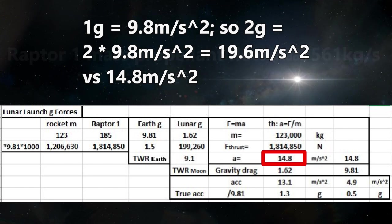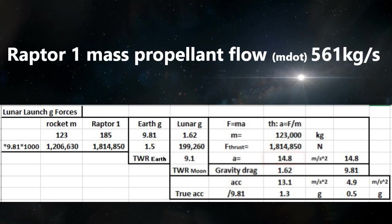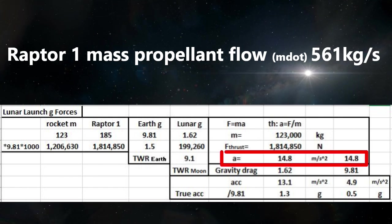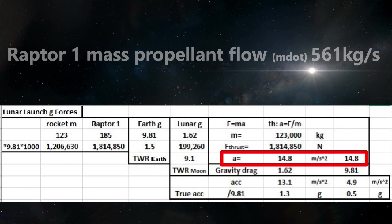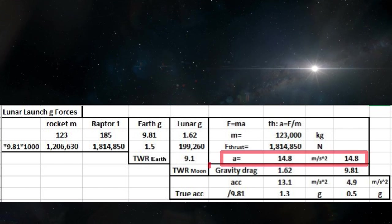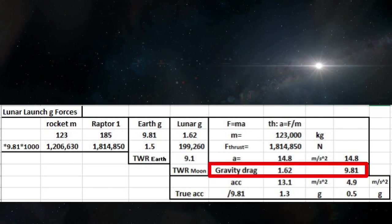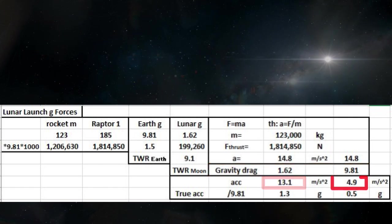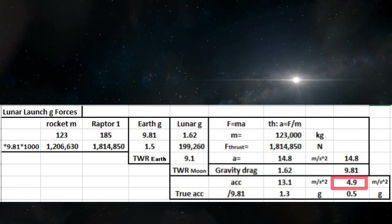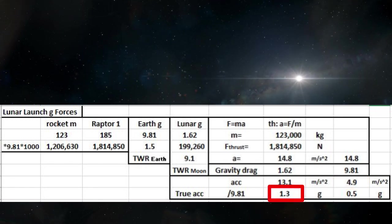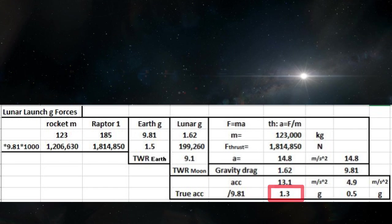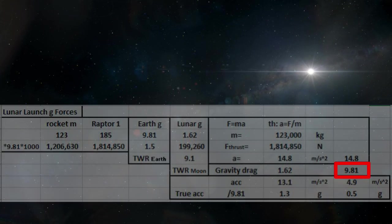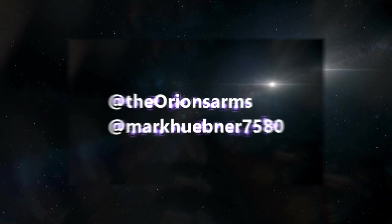We burn over half a ton of propellant per second, so our mass will drop and our acceleration will increase — but that doesn't save me. Looking at the starting acceleration and accounting for gravity drag, our acceleration is about 13 meters per second squared on the Moon and 4.9 meters per second squared on Earth. That has us feeling about 1.3 Gs on the Moon and half a G on Earth — compared to what we always feel living here on Earth. Thank you to those who pointed out that error.